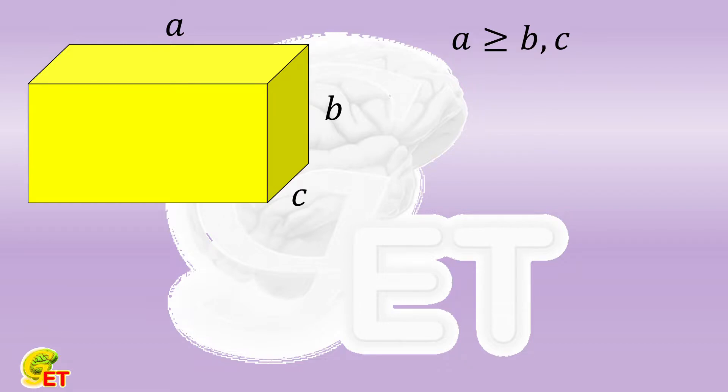The surface area is twice A times B plus A times C plus B times C, which equals 6. The summation of all edges is 4 times A plus B plus C, which equals 20. To simplify a bit, A times B plus A times C plus B times C equals 3. A plus B plus C equals 5.